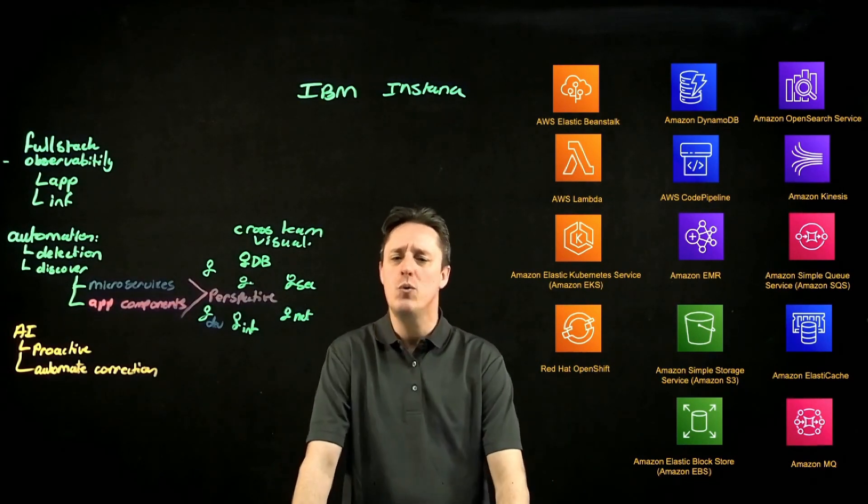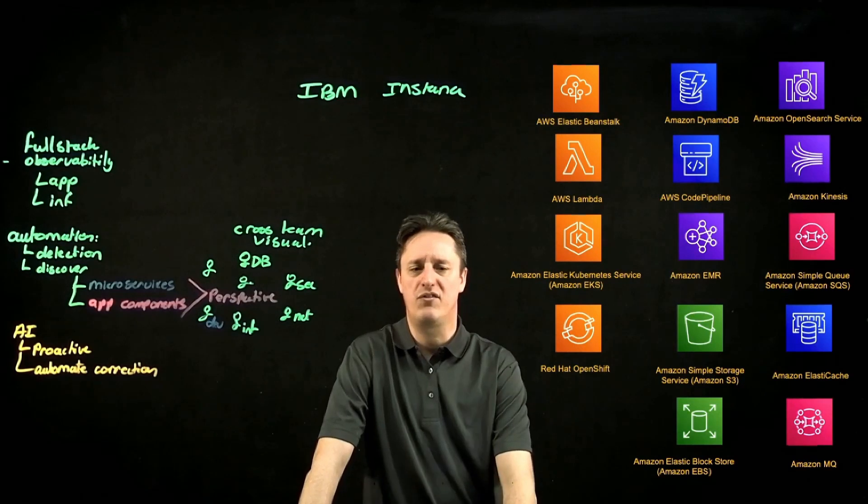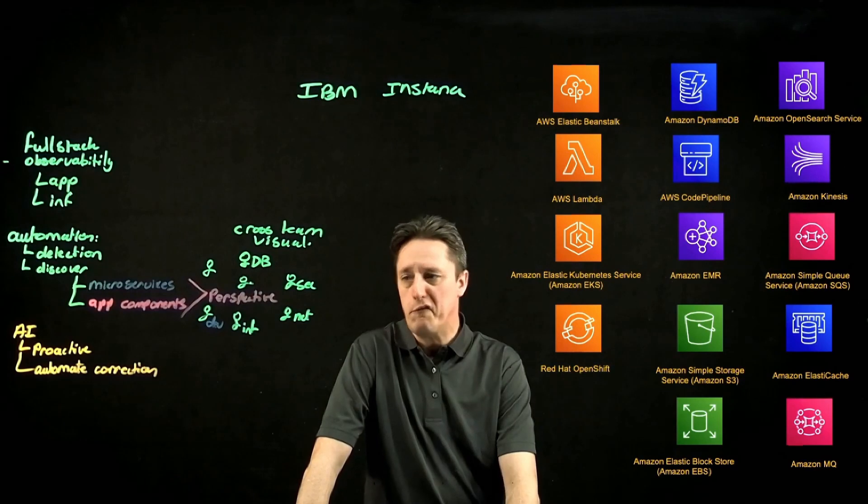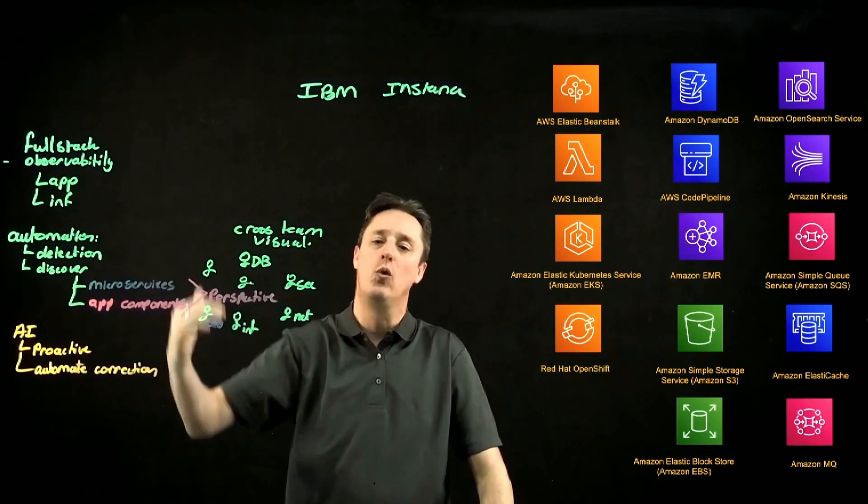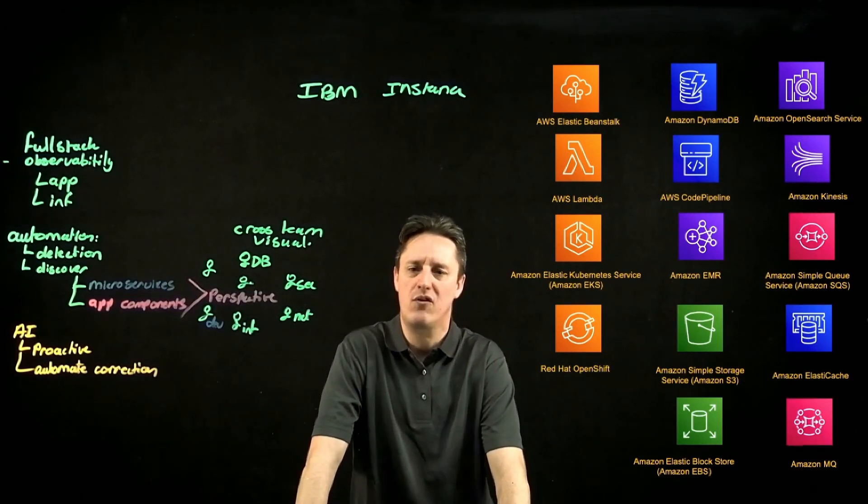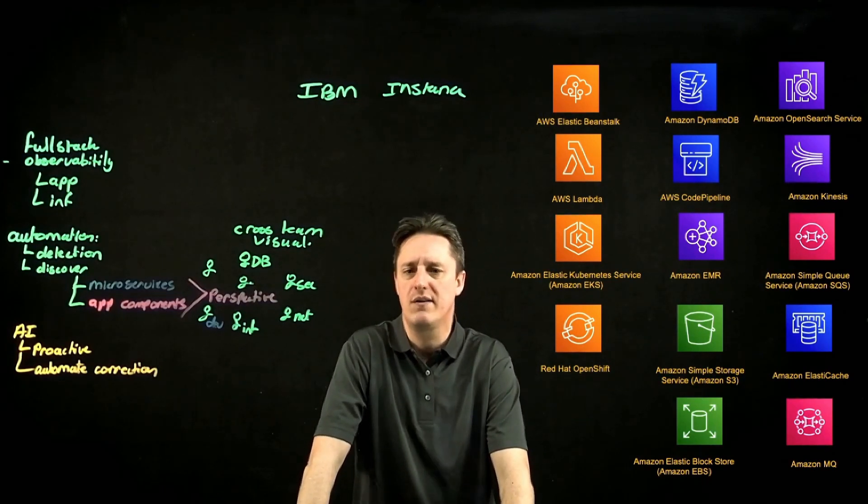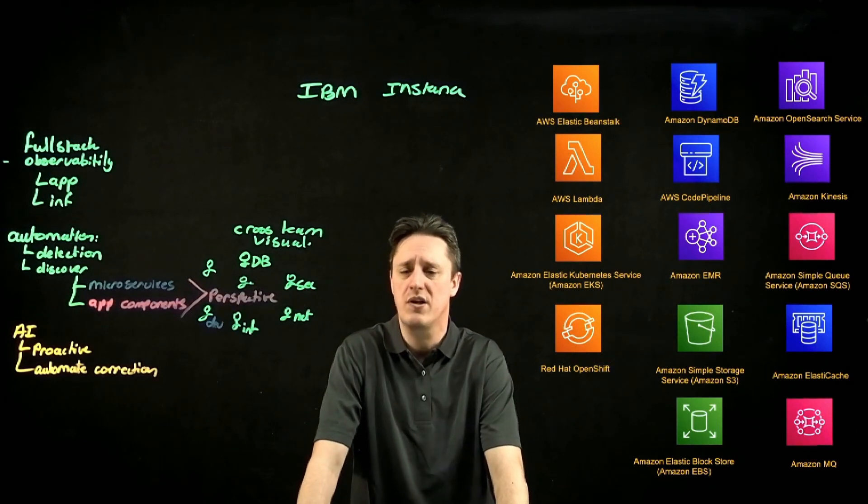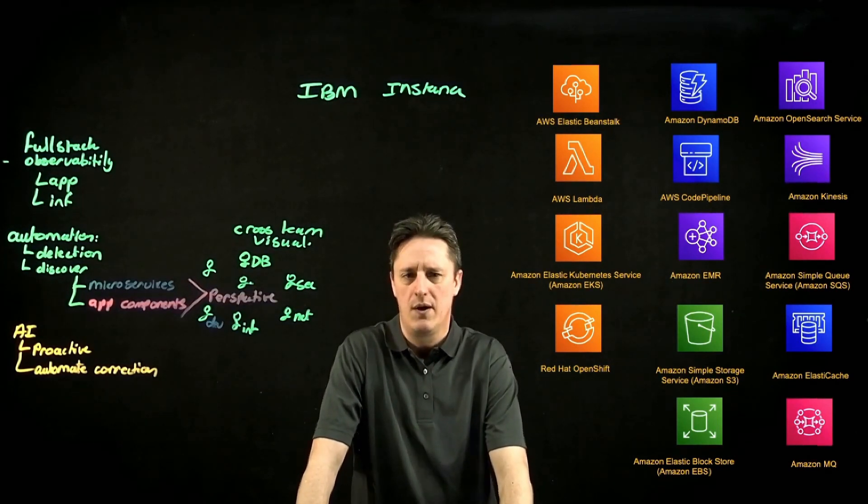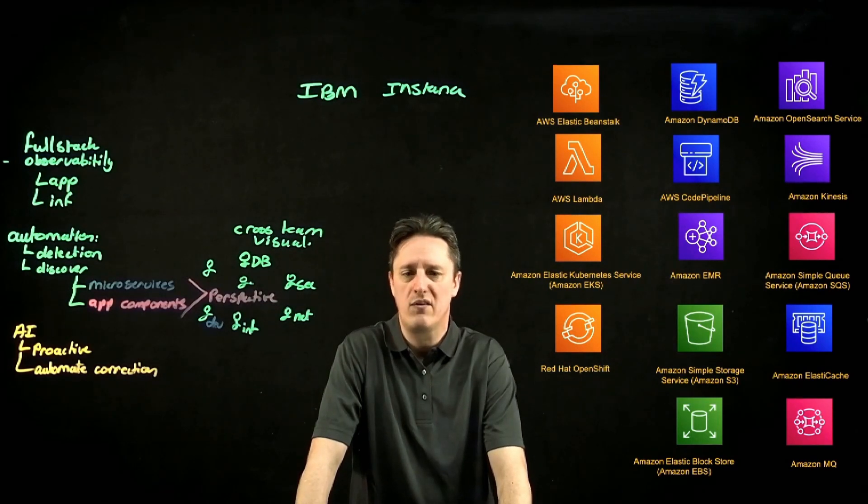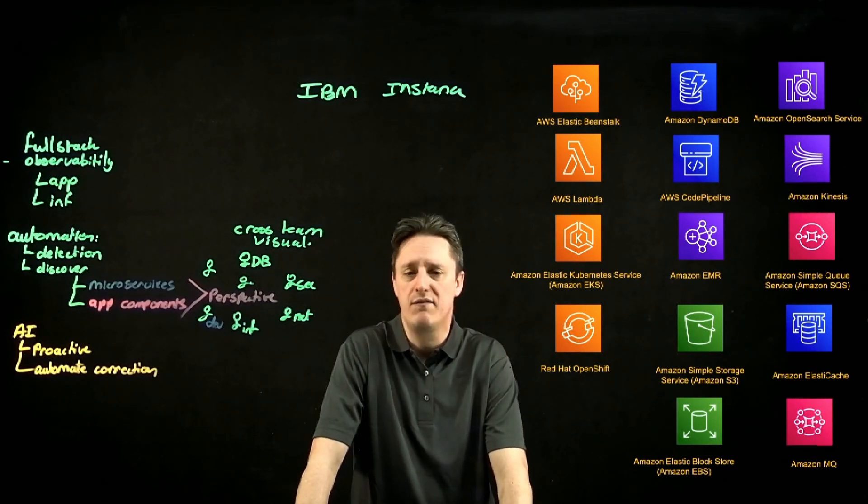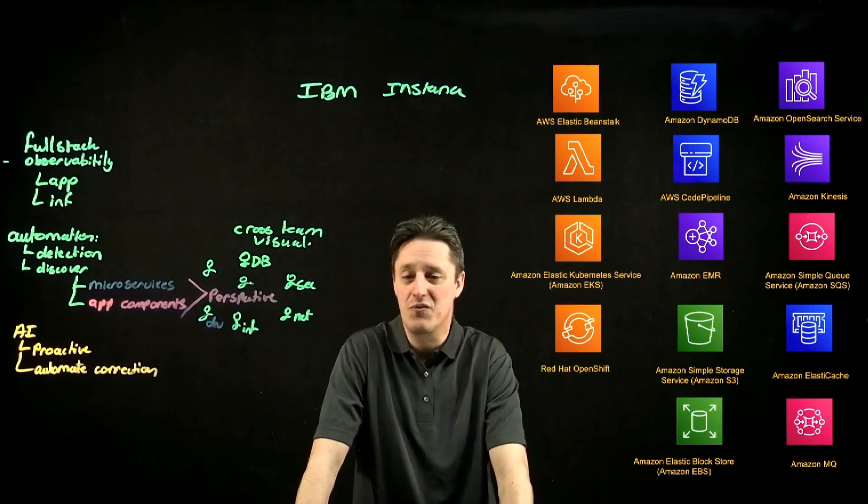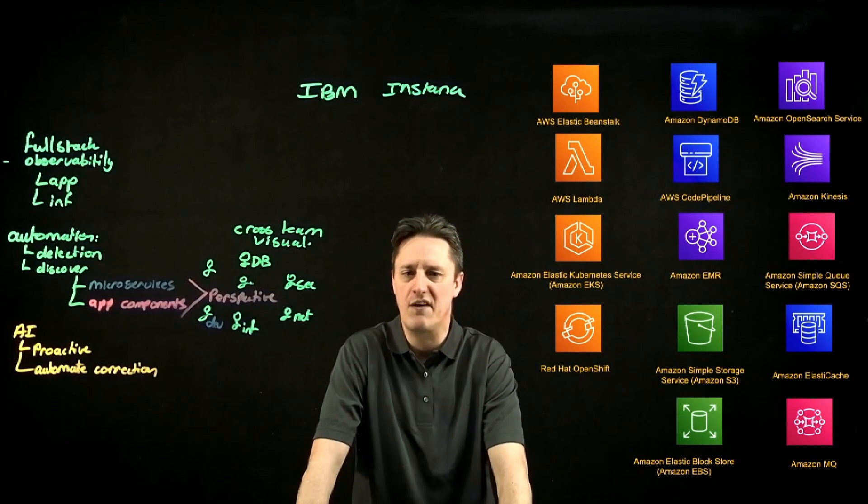And I also see queuing mechanisms such as Amazon's SQS. So all of these building blocks together give me different components of my overall application stack. Instana can interact with all of these. Instana can plug into them and get visibility and telemetry on them. So whether it's at the infrastructure level or the applications running on it, Instana has a way to deploy to most of these with relative ease. Whether it is a Kubernetes platform where I'm installing a Helm agent onto my Kubernetes platform to discover things.